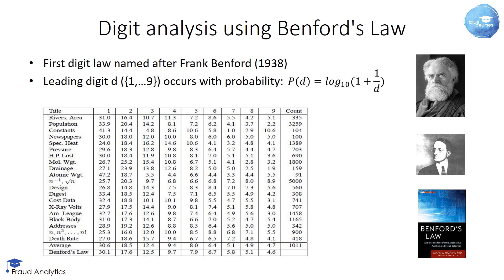The anti-fraud rationale behind the use of the law is that producing empirical distributions of digits that conform to the law is difficult for non-experts. Fraudsters may thus be biased towards simpler and more intuitive distributions such as the uniform. Strong deviations from the expected frequencies might indicate that the data is suspicious, possibly manipulated, and thus fraudulent.